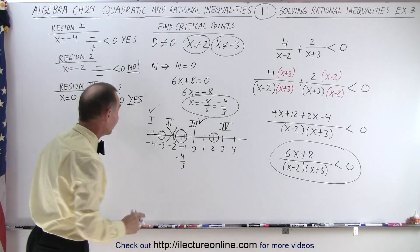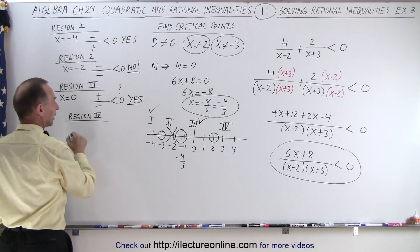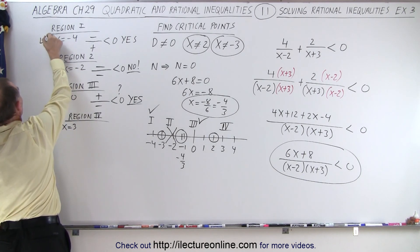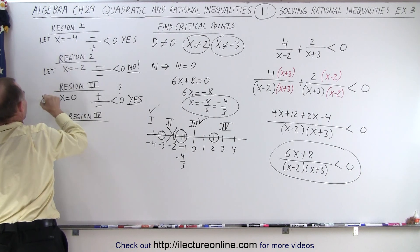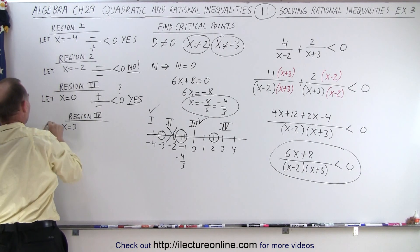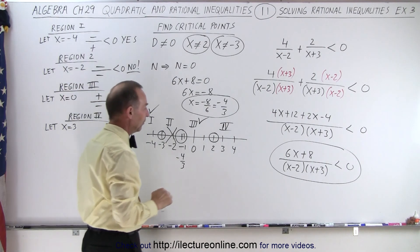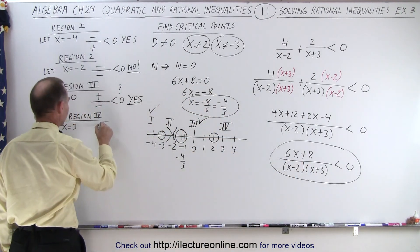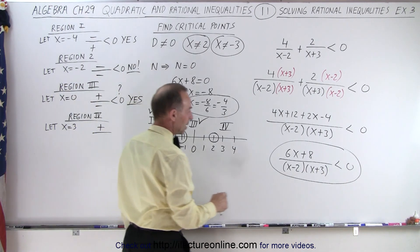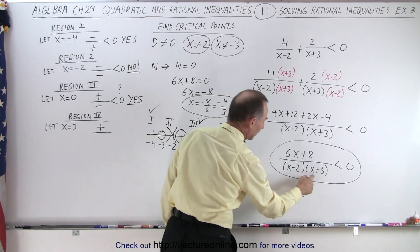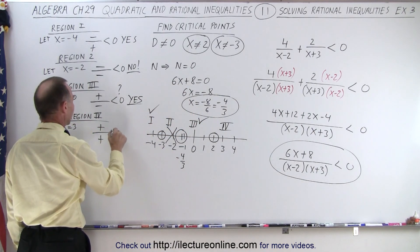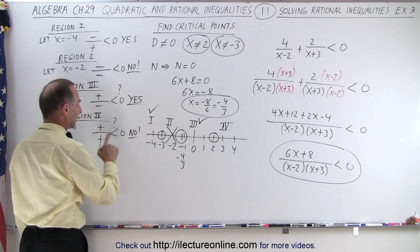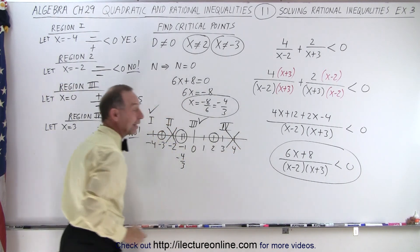How about region 4? We're going to let x equal 3. We pick that value because it represents that particular region. If x is 3, then 18 plus 8 gives a positive numerator. And if x equals 3, the denominator factors are both positive, giving a positive denominator. Is that less than 0? No, because a positive number cannot be less than 0. So region 4 is not included.